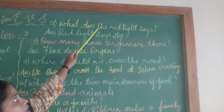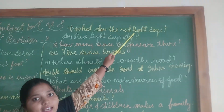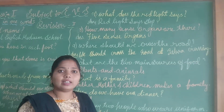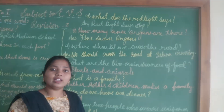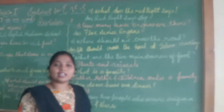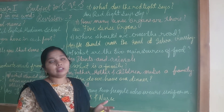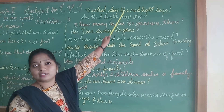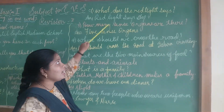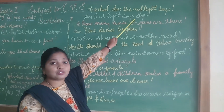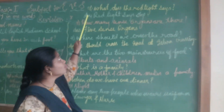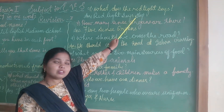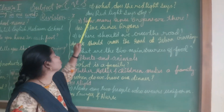Next: What does the red light say? In the traffic signal there are three colors — red, yellow, and green. The question is: what does the red light say? The red light says stop. S-T-O-P, stop.